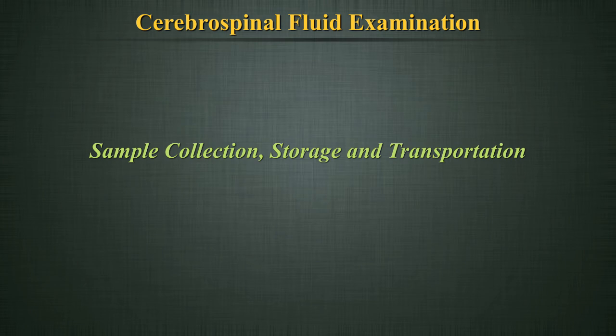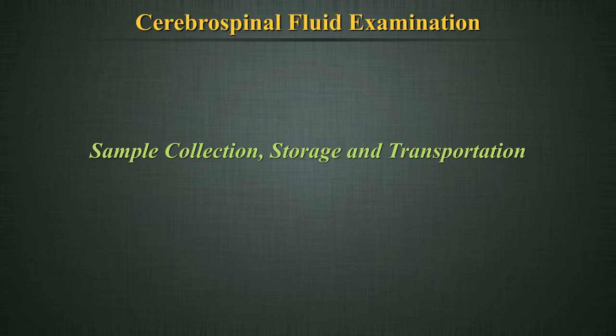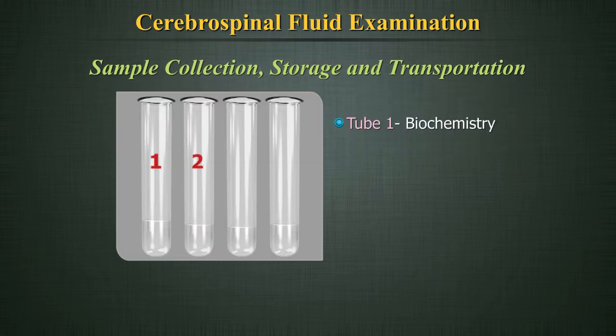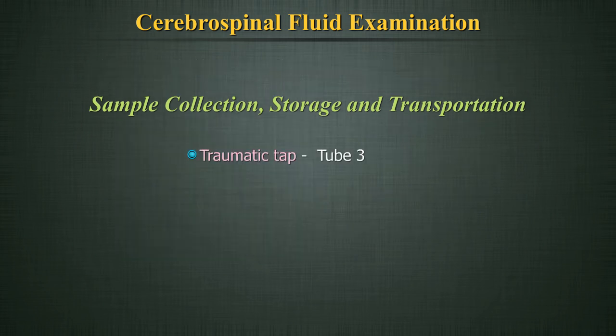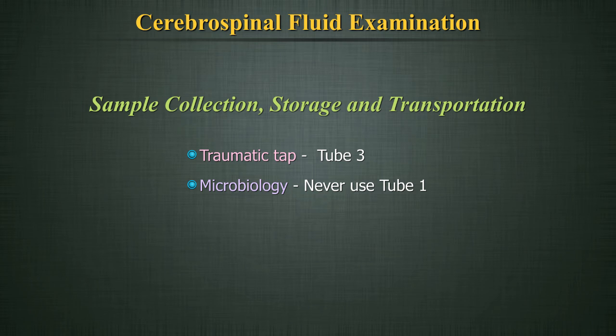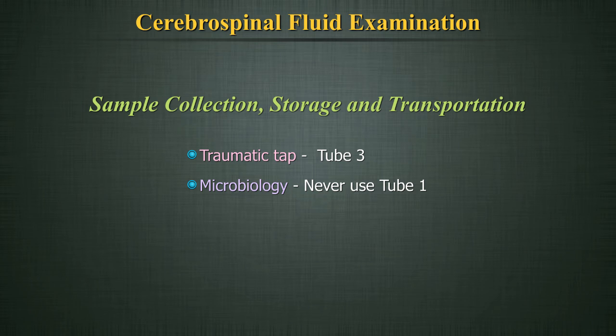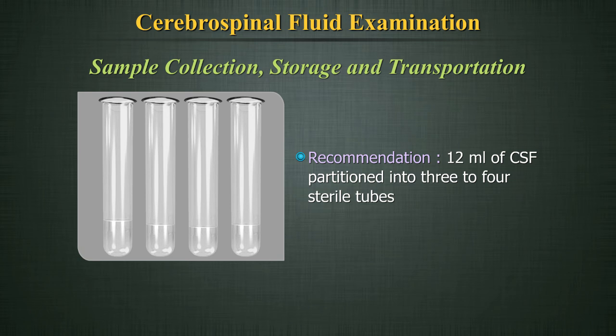Sample collection, storage, and transportation: Typically 3-4 tubes are drawn. Tube 1 is for Biochemistry, Tube 2 for Microbiology, Tube 3 for Cell Counts, and Tube 4 for Cytology. In a traumatic tap, Tube 3 must be used for maximum tests. Never use Tube 1 for Microbiology as it will have contamination with skin bacteria. Recommendations state that 12 ml of CSF should be partitioned into 3-4 sterile tubes.